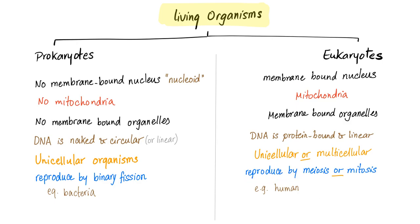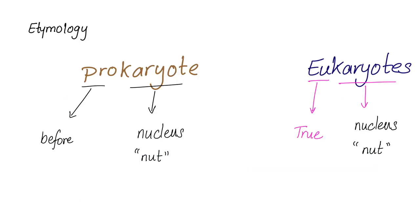Eukaryotes reproduce by meiosis or mitosis. What do these words mean? 'Pro' means before, and 'karyote' means nucleus or nut. 'Eu' in eukaryote means true, so eukaryote means 'true nucleus.' Instead of going crazy or going nuts, let's all go nucleus — or go karyotes!